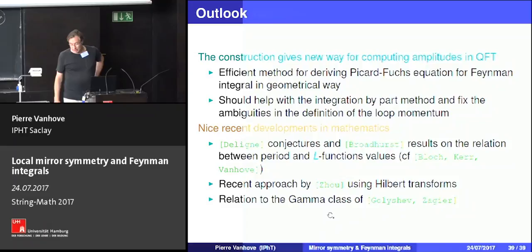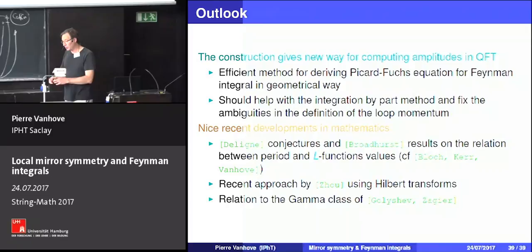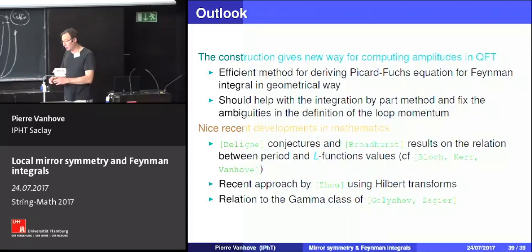There is also a nice connection that I hope sometime to say something interesting about — the relation to the work on the gamma class by Golyshev and Zagier. But I think that by physics intuition you can approach very abstract mathematics and get a very concrete way of getting around some of the obstructions people might think you could encounter. That is all I wanted to say — thank you.